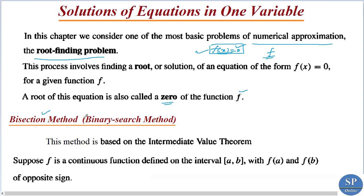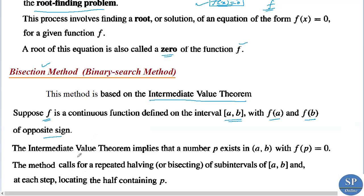The main idea of this method is bisecting an interval. This method is based on the intermediate value theorem. Suppose f is a continuous function defined on the interval [a, b] with f(a) and f(b) having opposite signs. Then the intermediate value theorem implies that there exists a number p in (a, b) such that f(p) = 0. So our aim is to find such a p where f(p) = 0.